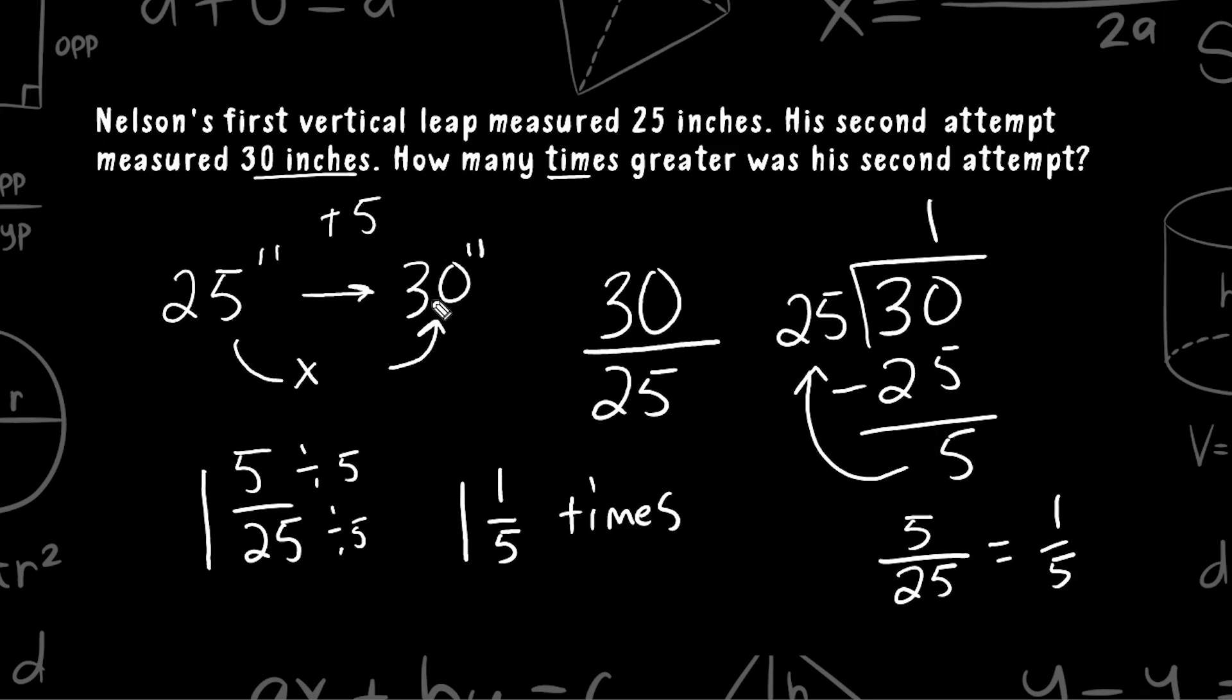So on a second attempt, he got the full 25 inches, which would be 1 times as great because 25 and 25 are the same thing. But then that 5 extra represents 1 fifth of the original jump. Let's go ahead and solve another example.